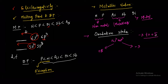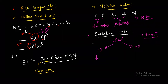Now regarding the stability of the +5 oxidation state: as we go down the group, because of the inert pair effect, these two electrons are inert towards bonding. Therefore, the tendency to form the +5 oxidation state decreases down the group, while the tendency to form the +3 oxidation state increases down the group.